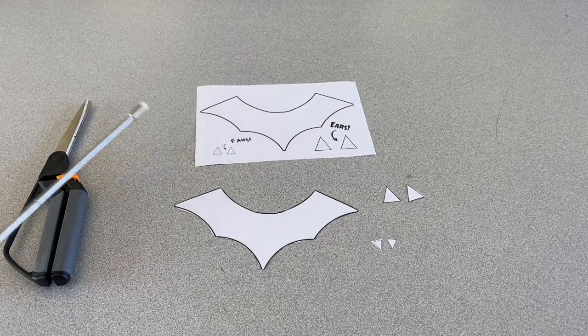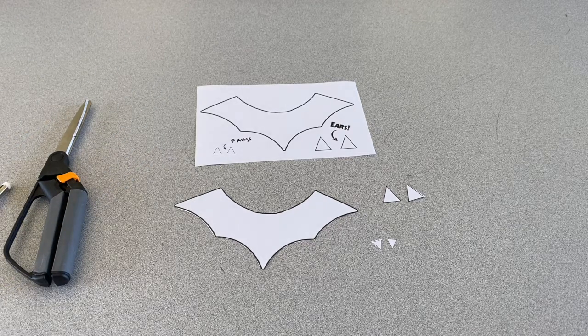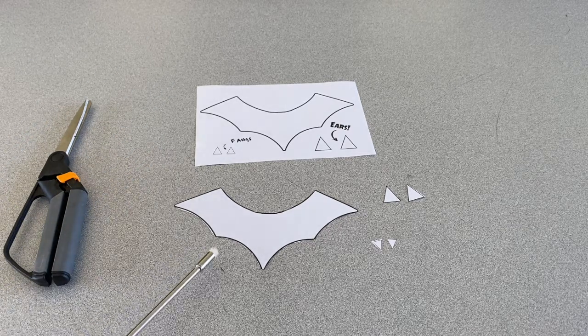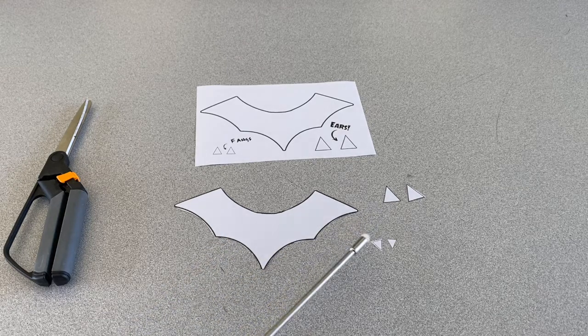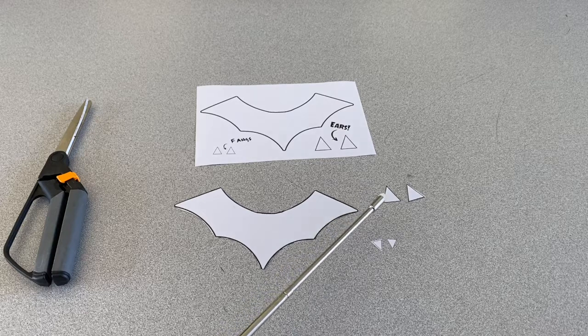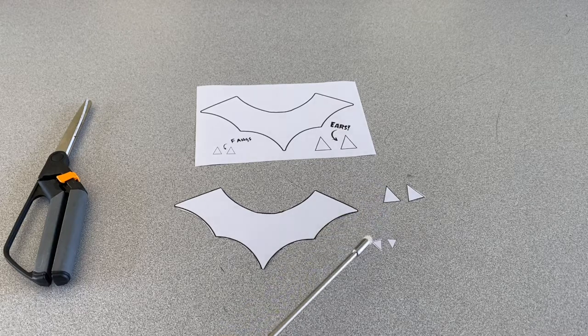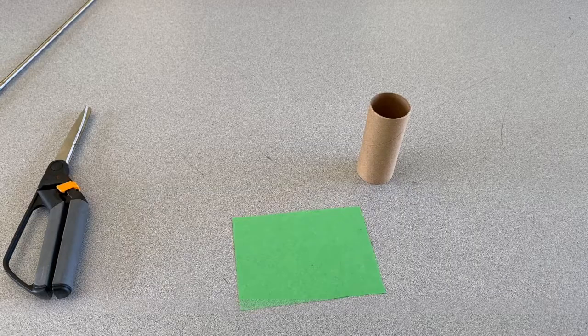Okay, now let's get started. The first thing you want to do is get your template and scissors out and go ahead and cut out your wings, your ears, and your fangs. Remember that the ears are the bigger triangles and your fangs are the smaller triangles.